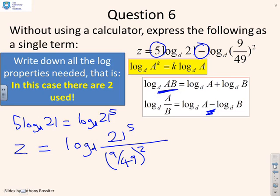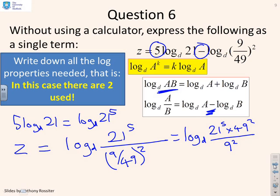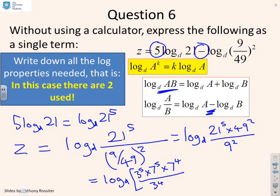Putting this all together, you end up with log d of 21 to the 5 times 49 squared all over 9 squared. This might look like a bit of a mess, but the algebra is not actually too difficult. Recognising common factors and writing it out longhand: 21 to the 5 is 3 to the power 5 times 7 to the power 5, then you've got 7 to the power 4 from the 49 squared, and 9 squared is 3 to the power 4. So you end up with log d of 3 times 7 to the 9.